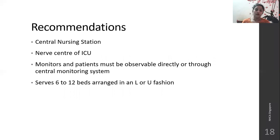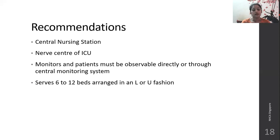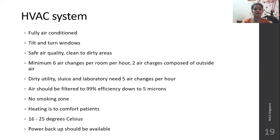The central nursing station is the nerve center of the ICU. It should be equidistant to all patient beds and all patients should be observable from the nursing station either directly or through a central monitoring system. It can be arranged in an L or U shape and serves up to 6 to 12 beds. The ICU should be fully air-conditioned, with minimum 6 air changes per room per hour. Two air changes can be composed of outside air.